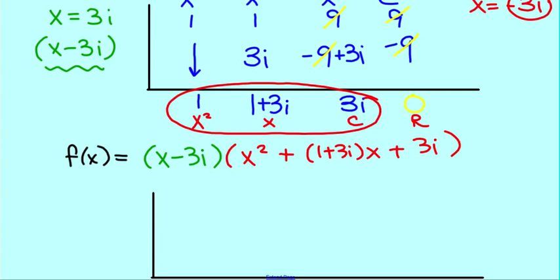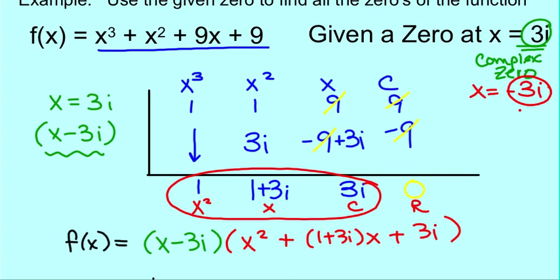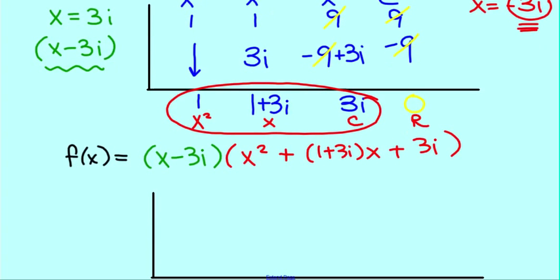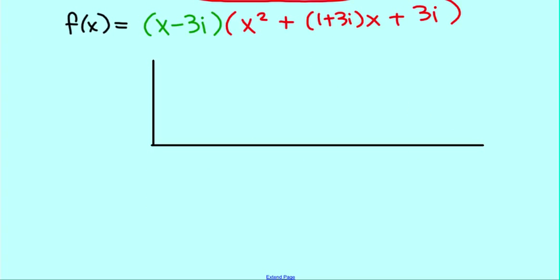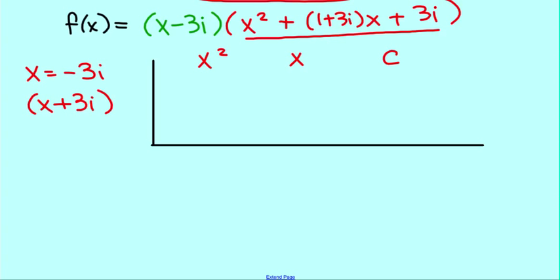Now we're going to continue using synthetic division. If you remember up here, this negative 3i is also a zero of the function. So I'm going to just make this green a little bit bigger here. And we're going to factor out again, but now we're going to factor x equals negative 3i. As a factor, it's x plus 3i. So we're going to use this quadratic equation and factor out the x plus 3i. So x squared is my placeholder, x, and constant. My coefficients are 1, 1 plus 3i, and 3i.